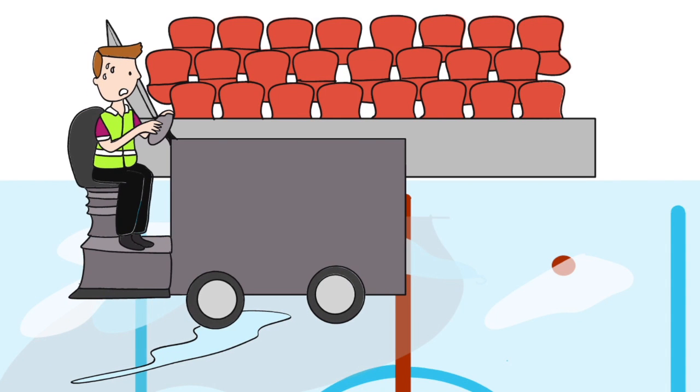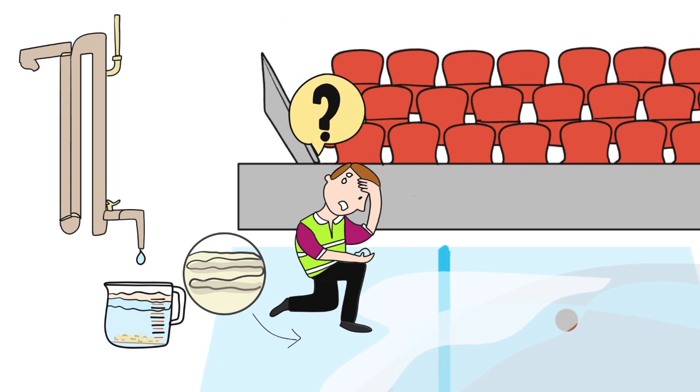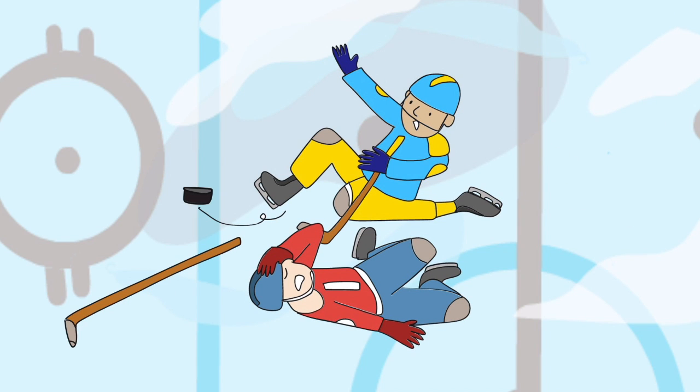Charlie is struggling to make a good sheet of ice. The water he uses to resurface his ice is very hard. Even though he doesn't like to admit it, his ice is brittle and cloudy.